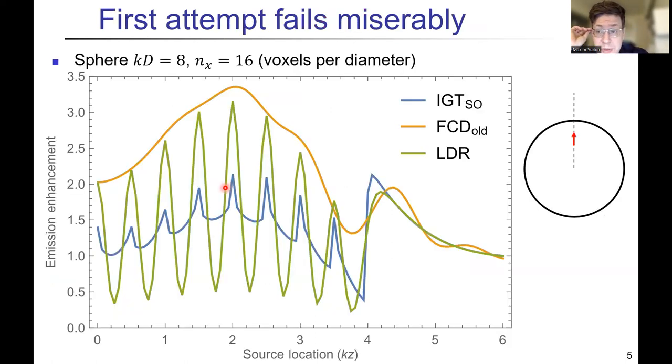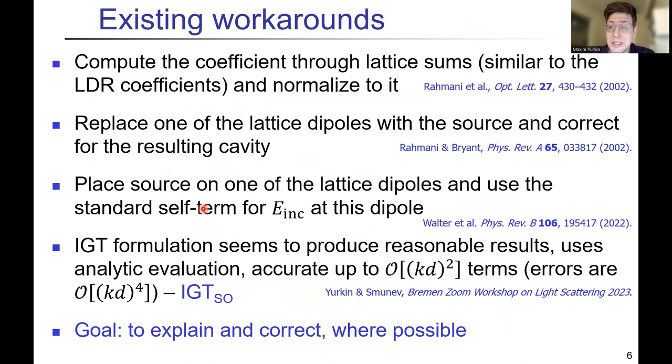The first attempt actually fails miserably, as you see here, because we take a sphere, we place a dipole polarized along z-axis and move it along this axis. The result differs a lot between the formulations. There are three formulations of the DDA here. All three basically give different results. When we get outside of the particle, apart from some oscillations, there is convergence. But inside the particle, something bad is happening.